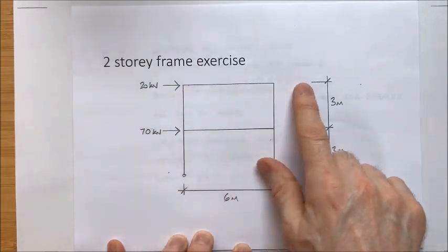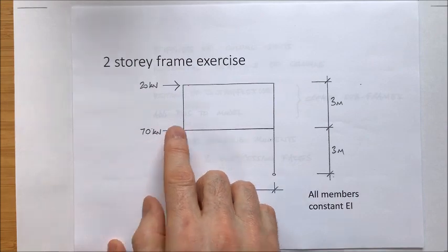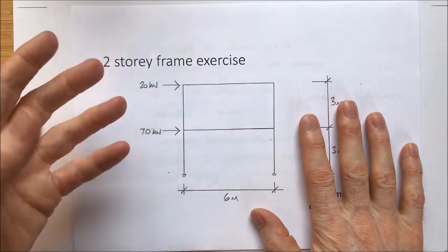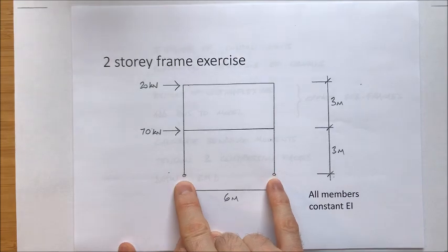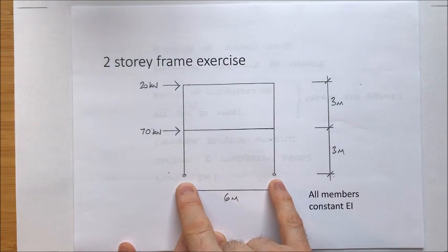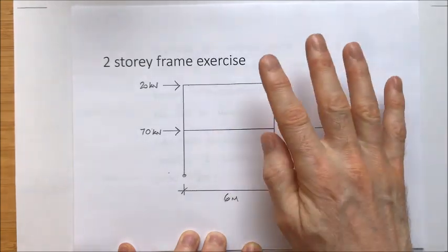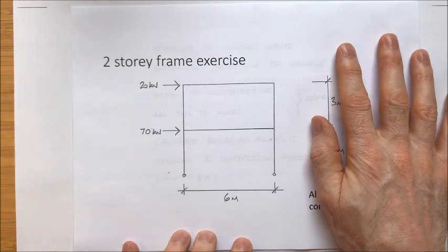So here's our frame that we're going to analyze. It's a two-storey frame with pinned feet and two horizontal loads applied at each floor level. That would often be through wind blowing onto cladding, which in turn is transferred to the floor decks. Having pinned feet in a multi-storey frame is quite common.